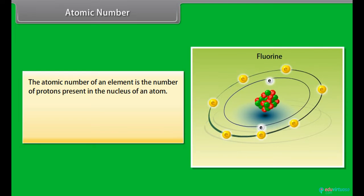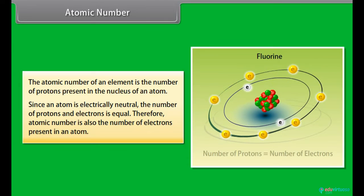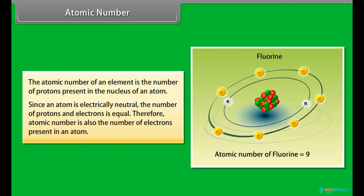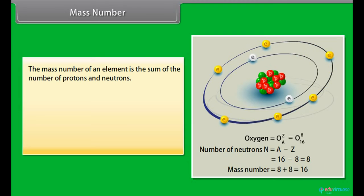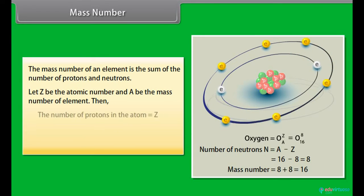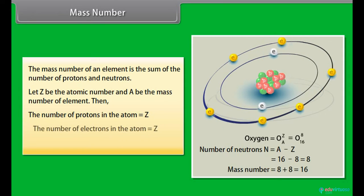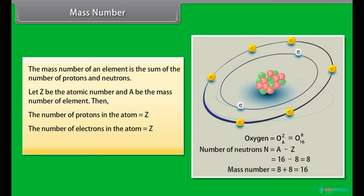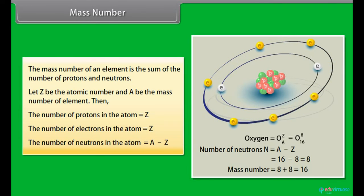Atomic number: The atomic number of an element is the number of protons present in the nucleus of an atom. Since an atom is electrically neutral, the number of protons and electrons is equal; therefore, atomic number is also the number of electrons present in an atom. Mass number: The mass number of an element is the sum of the number of protons and neutrons. If Z is the atomic number and A is the mass number, then the number of protons equals Z, the number of electrons equals Z, and the number of neutrons equals A minus Z.